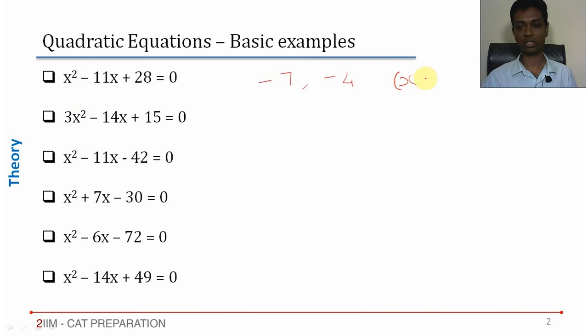So (x - 7)(x - 4) = 0. That is how we will factorize this equation.